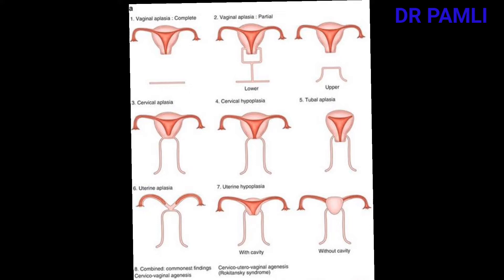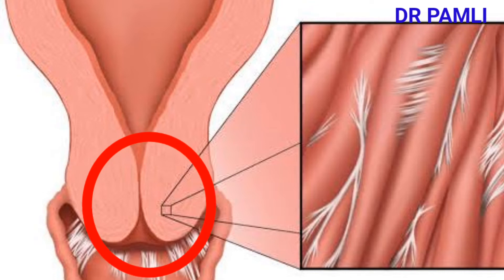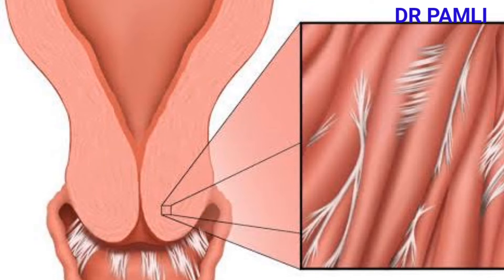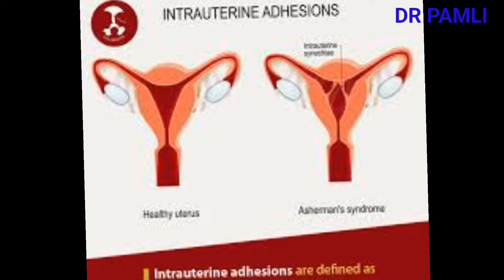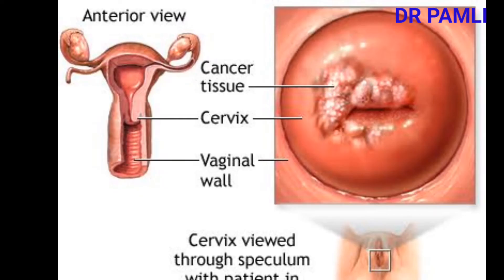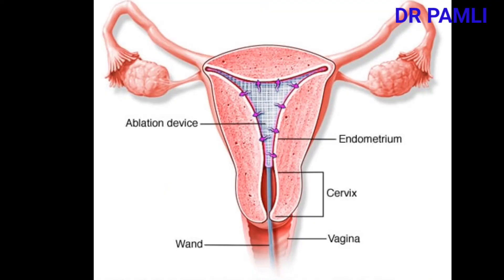Other causes, beyond congenital abnormalities, include cervical stenosis, whereby the cervix is narrow and thin. There are also intrauterine adhesions, which may be due to infection or previous surgeries. Cancer of the cervix also plays an important role in the causes of hematometra, as do surgical complications such as endometrial ablation — the removal of the endometrial lining — which can lead to hematometra.